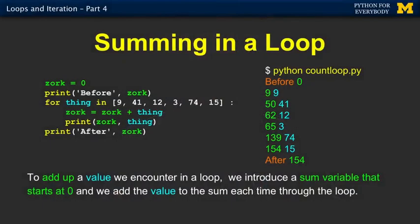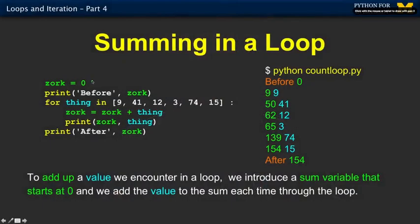The next thing we're going to do is total up a series of values. We're going to have another variable — zork — which I would probably call total. During the loop it'll be the running total, and at the end of the loop it will be the total. So total equals zero before. That's the running total of what we've seen. So now nine comes out, and zero plus nine is nine. So the running total is nine, and nine was what we looked at.